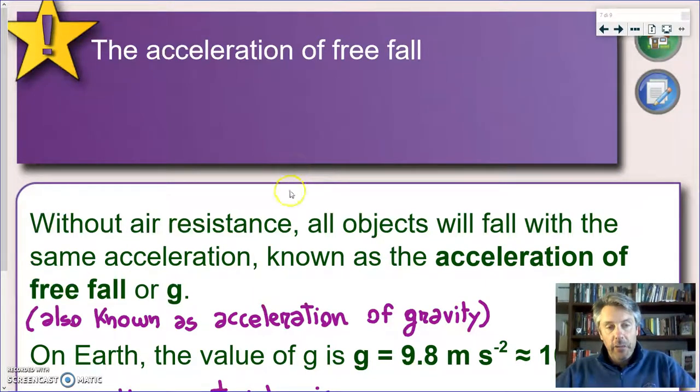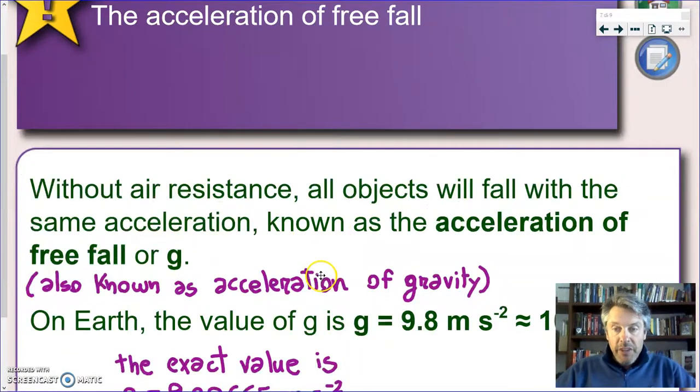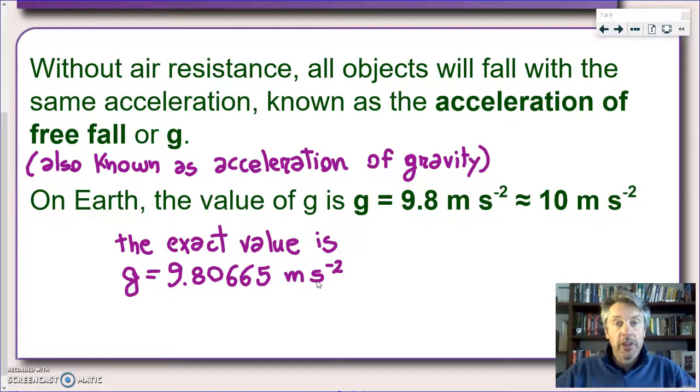Now, if we take that thing away, what Galileo said and what then later was proved with experiments is that all objects will fall with the same acceleration. So, every object on Earth, you drop them, you take away the effect of air resistance, you see they all fall with the same acceleration. So, we can give a name to this acceleration and we will call it acceleration of free fall, also known as the acceleration of gravity. And we will call this quantity g because at this point it is a constant. And this constant will depend only on the strength of the gravitational force field on that planet.